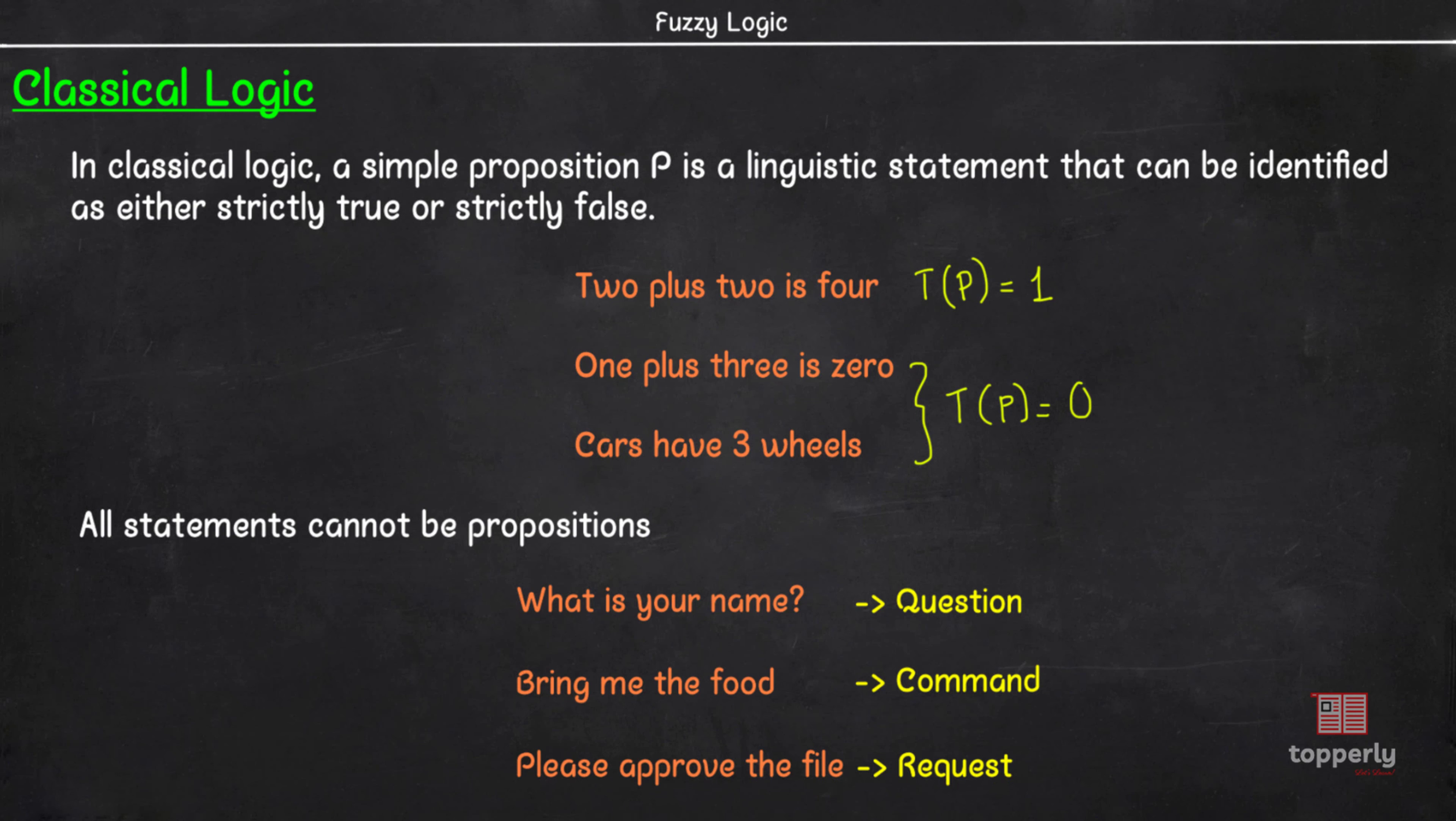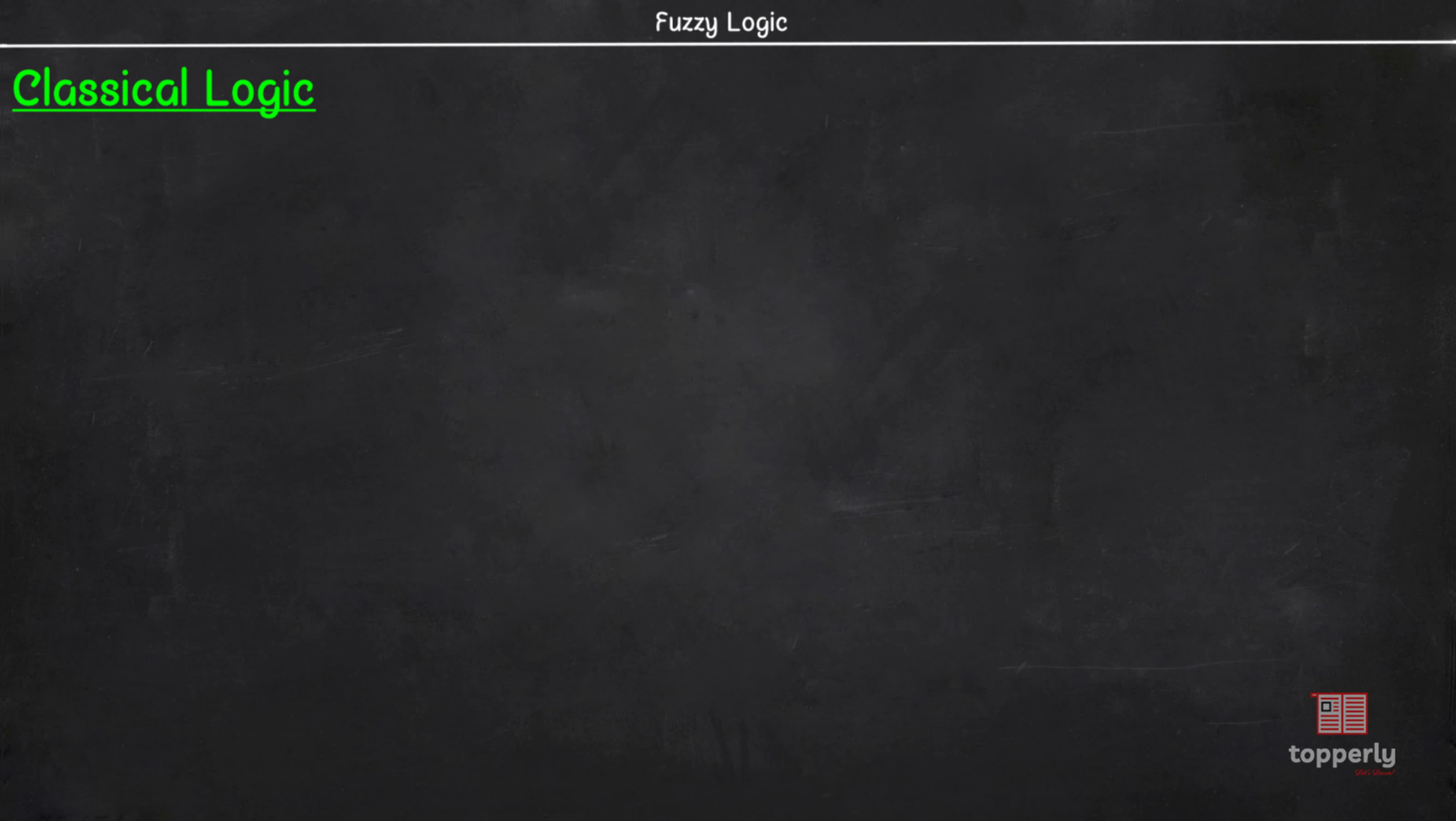There are cases where a sentence does not provide enough information to determine whether it is true or false. Such sentences are also not propositions. As an example, consider the statement, he is a cricketer. This sentence does not tell us who we are talking about. So, this is not a proposition.